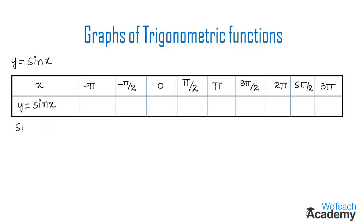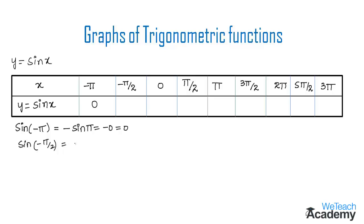Substituting x = -π: sin(-π) = -sin(π) = 0, so y = 0. For x = -π/2: sin(-π/2) = -sin(π/2) = -1, so y = -1.